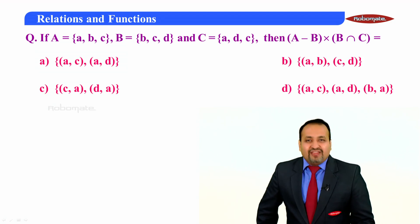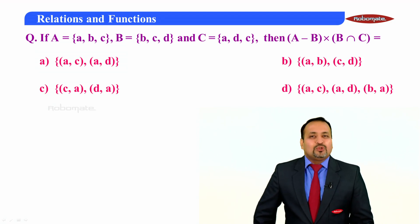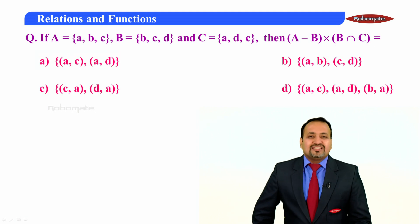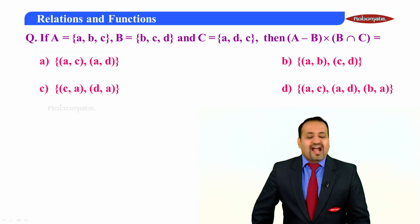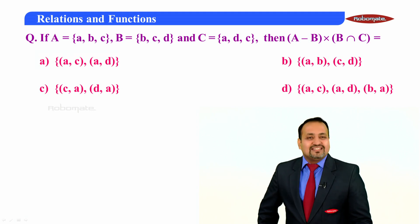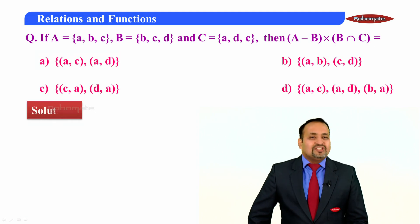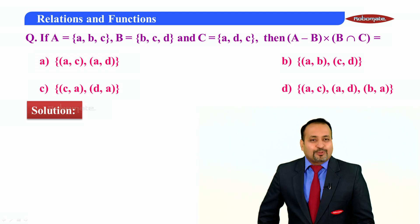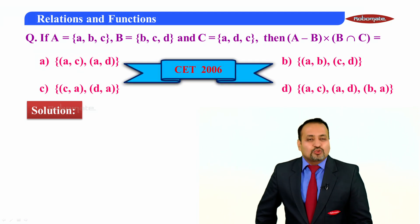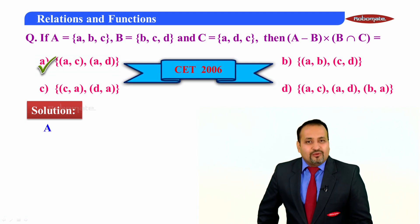This is the first question. If A = {a, b, c}, B = {b, c, d}, and C = {a, d, c}, then (A minus B) cross (B intersection C) is equal to — with four given options. This question appeared in CET 2006, and the correct answer is option A.